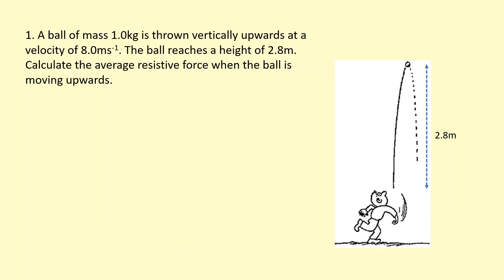A ball of mass one kilogram is thrown vertically upward at a velocity of eight meters per second. The ball reaches a height of 2.8 meters. Calculate the average resistive force when the ball is moving upwards. There is air resistance, so we can't just use our suvats in this case.